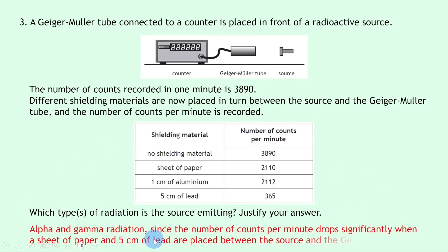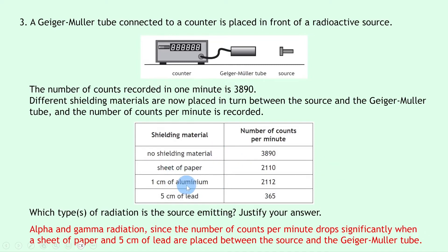The source must be emitting alpha and gamma radiation. The count rate drops significantly when a sheet of paper is placed in the way — from 3,890 down to 2,110 — so the paper is absorbing alpha radiation. When one centimetre of aluminium is placed in the way, the count rate only goes up by two, staying essentially the same at 2,112, so there's no beta being absorbed. When five centimetres of lead is placed between the source and the tube, the count rate drops from 2,112 all the way to 365, meaning the lead is absorbing gamma radiation. Since there was no beta absorbed, the source must be emitting alpha and gamma radiation.